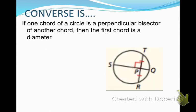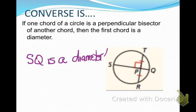The converse of this is: if you have one chord of a circle that is the perpendicular bisector of another chord, then your first chord is a diameter. So in this particular circle, I know that SQ is a perpendicular bisector of chord TR; therefore I can conclusively say that SQ is a diameter.